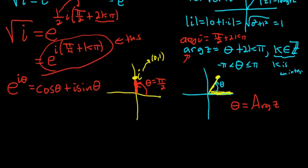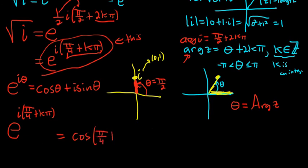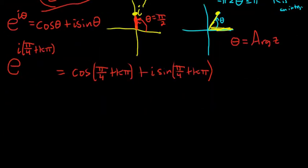So in this case, theta is pi over 4 plus k pi. This is e to the i times pi over 4 plus k pi. And that's equal to cosine of pi over 4 plus k pi, plus i sine of pi over 4 plus k pi. Let's see if we can figure out what this is.